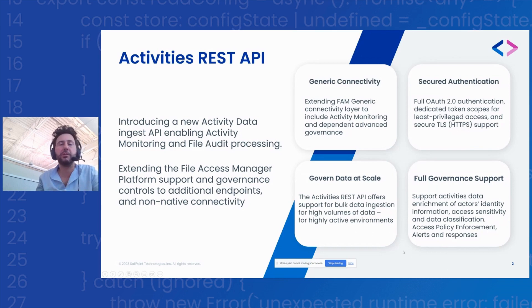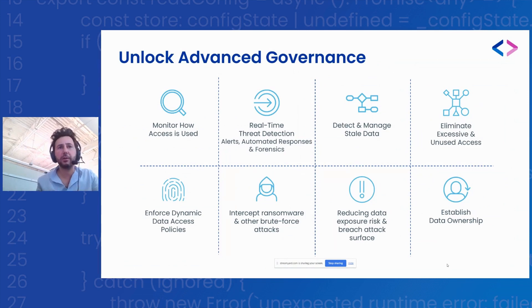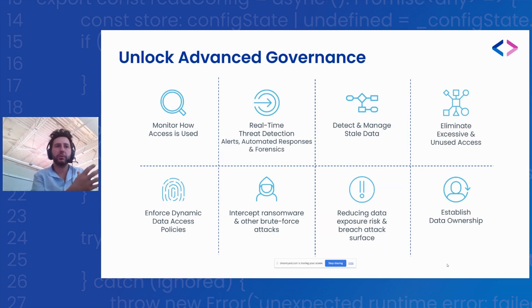The API is built for scale so you can ingest large bulks of activity data with great performance. It will unlock several advanced governance use cases that depend on having activity data — the first being understanding who's doing what with the data, who's leveraging the access they have to perform operations on the data itself. That ingested activity goes through the same process as any natively monitored activity.